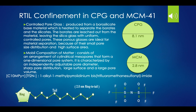RTIL confinement in CPG and MCM41. In my research, we have the RTIL confined in two different silica nanopores. The silica pores are CPG and MCM41, and they have different diameters. The CPG has a diameter of 8.1 nanometers and MCM has a diameter of 2.8 nanometers. CPG stands for controlled poured glass, and it is produced from a borosilicate-based material, which is then heated to separate the borates and silicates. The borates are then leached out from the material, leaving the silica glass with uniform controlled pores.